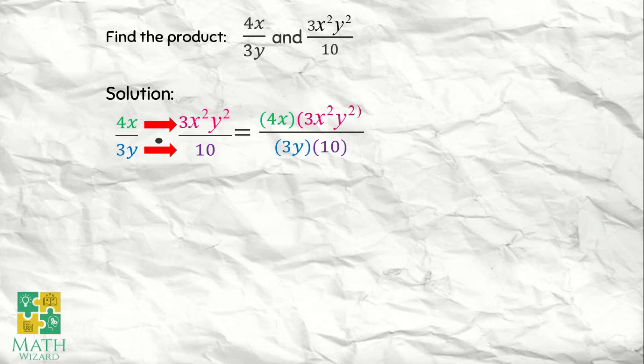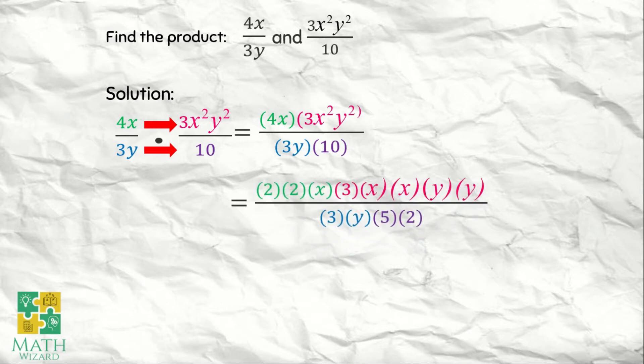After that, we need to factor each monomial. 4x becomes 2 times 2 times x. 3x squared y squared becomes 3 times x times x times y times y. 3y becomes 3 times y and 10 becomes 5 times 2. After that, we need to cancel the common terms. So these are 2 and 2, 3 and 3, y and y.